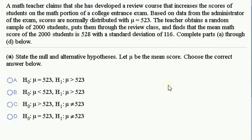So the null hypothesis would be that the mean remains at 523, just the same as the regular population. The alternative would be that the score has been increased from 523 to something bigger.